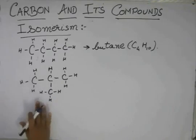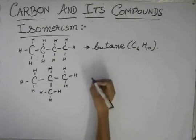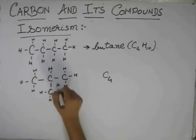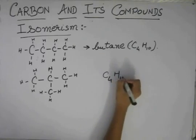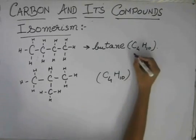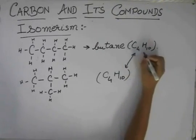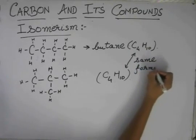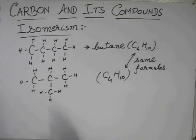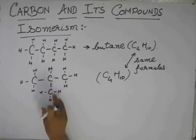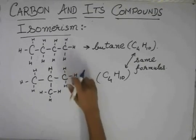Now look at the formula of this compound. There are four carbons, so it's C4, and there are three plus three plus three plus one — that is again 10 hydrogens. So you see, the two formulas are the same. But is the compound the same? No. This is a straight chain. This has a branching at one of the carbons. So these compounds are not the same.